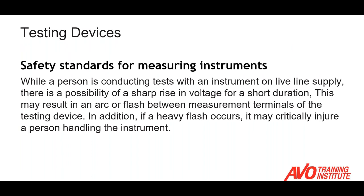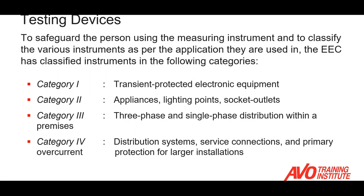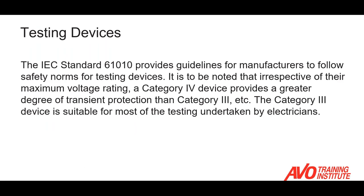What are some safety standards for test equipment? While a person is conducting a test on a live circuit, there's a possibility of a sharp rise in voltage for a short duration, which may result in an arc flash between the measurement terminals. If a heavy flash occurs, a person could be critically injured while handling the instrument. The IEC has divided multimeters into four categories depending on the environment, and a category four meter could be rated at a lower voltage than a category three meter. We need to review the manufacturer's documentation and make sure we have the right meter selected for the environment.